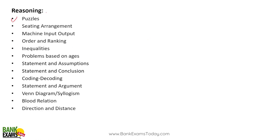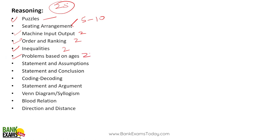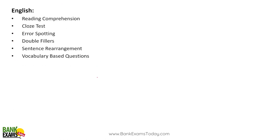In reasoning ability, puzzles and sitting arrangement together total 25 questions in the section. You can expect one puzzle or one sitting arrangement, giving 5-10 questions at most — maybe just 5, or even no puzzle at all. Machine input-output, order and ranking, inequalities give 2 questions each. Problems based on ages — 100% sure to appear. Blood relations give 2 questions, direction sense test gives 2-3 questions, syllogisms give 2-3 questions. Statements and arguments, statements and conclusions, assumptions, and coding-decoding each give 1-2 questions.